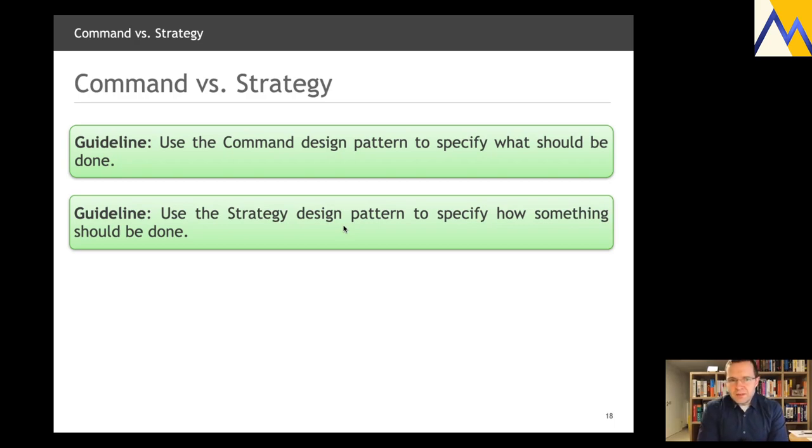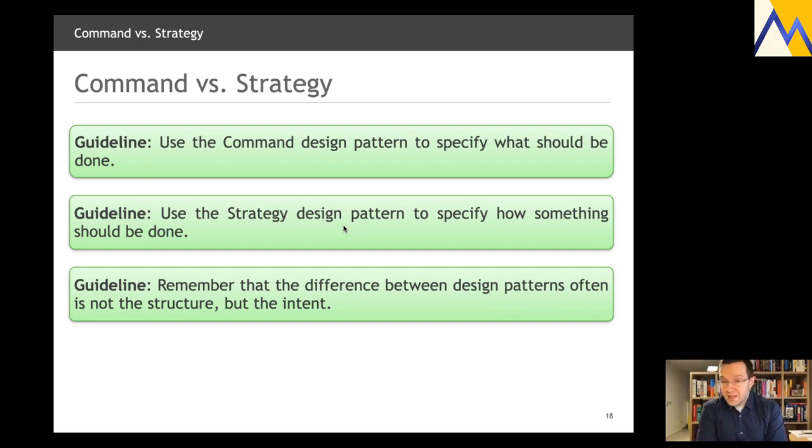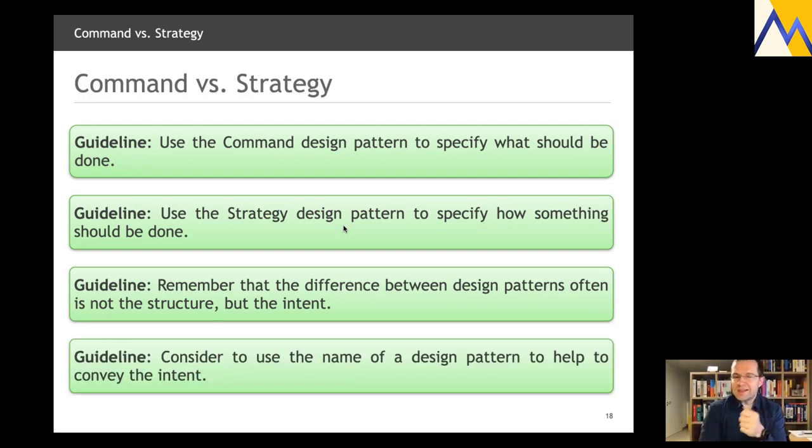If you want to remember what the difference between these two is, then use the command design pattern to specify what should be done, and use the strategy design pattern to specify how something should be done. That probably ultimately is the difference. And if this is a little confusing, that it's such a small apparent difference, then please remember that the difference between many design patterns, not just these two, is not any kind of structure, but the intent. It's the intent that makes a design pattern, ultimately. And if you really take a close look at the Gang of Four book, you'll find that out of these 23 design patterns, probably half of them is structurally identical, but the intent is different. And so, to truly communicate what you want to do, the name of the design pattern might actually help. Consider to use the name of a design pattern to help to convey your intention. What is it that you truly want? Do you want somebody to specify how something works, what needs to be done?